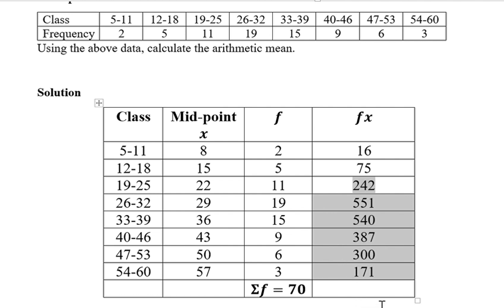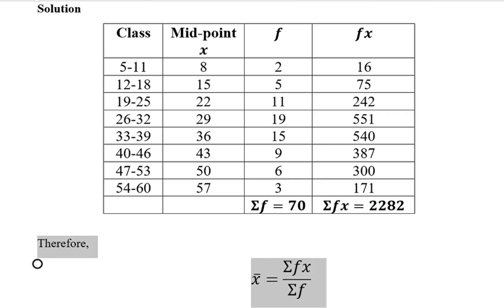We also need this sum and therefore we add it. We shall get 2282. So the mean will be calculated using the formula that we had up there. That is equal to summation fx, which is 2282, divided by summation f, which is 70. If you work that out, you will get 32.6, and that is the mean for this grouped data.